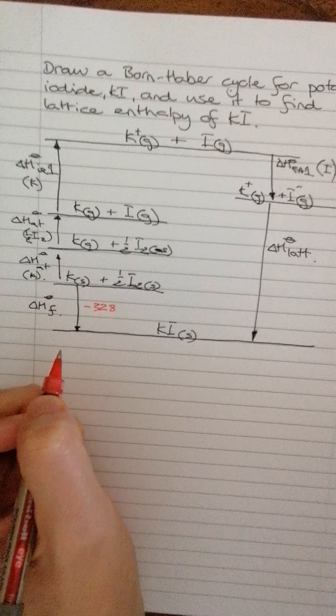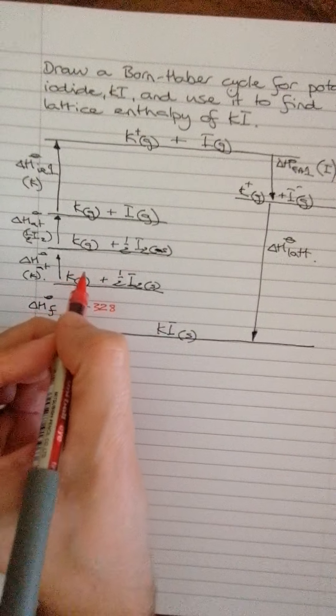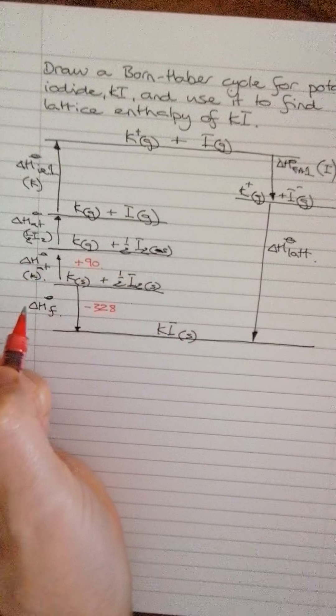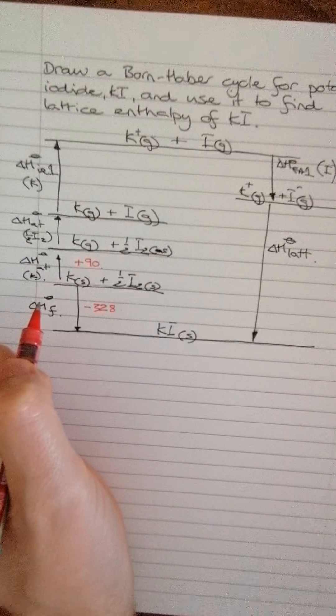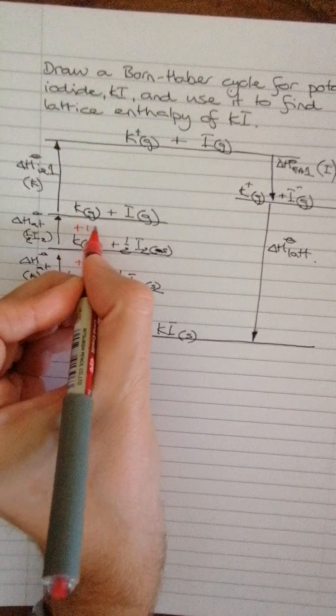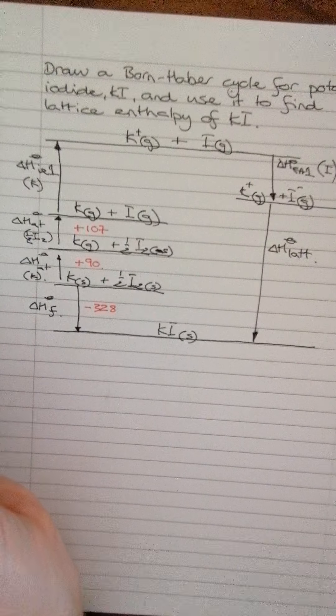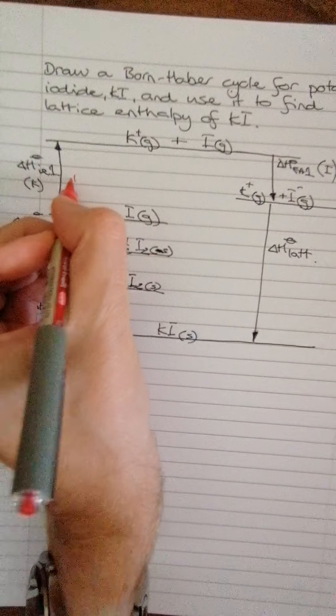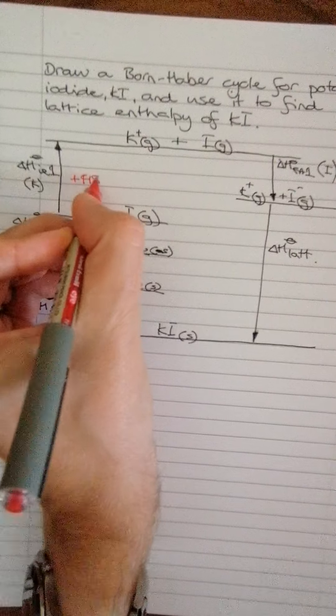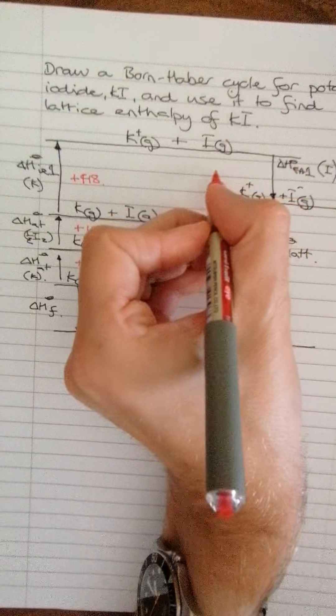For example, I know that this enthalpy change of formation is minus 328 kilojoules per mole. I won't put all the kilojoules per mole in. I know that the atomization of potassium is plus 90. I know that the iodine is plus 107. I know that the first ionization energy of potassium is plus 418.